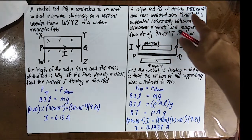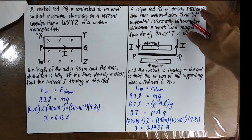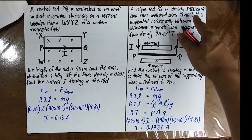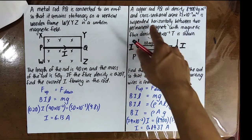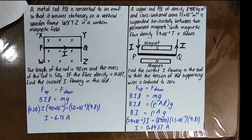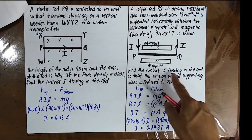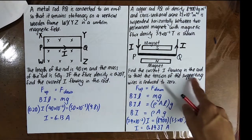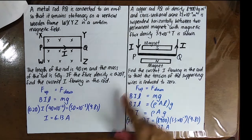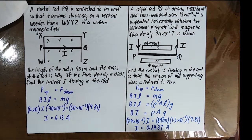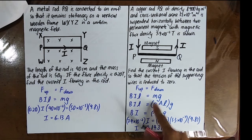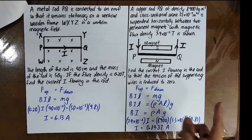Example: A copper rod PQ with density 8900 kg/m³ and cross-sectional area 1.3 × 10⁻⁷ m² is suspended horizontally between two permanent magnets. Find the current I so that the tension in the supporting wires is reduced to zero. Using the same reasoning as the previous example, the magnetic force must equal gravity. The key difficulty is using density = mass/volume to find the mass of the rod.